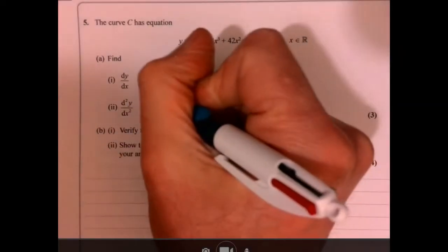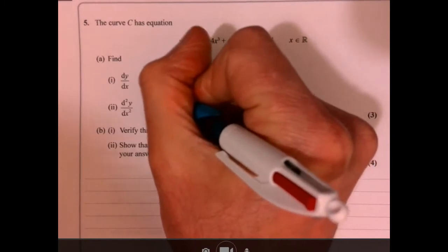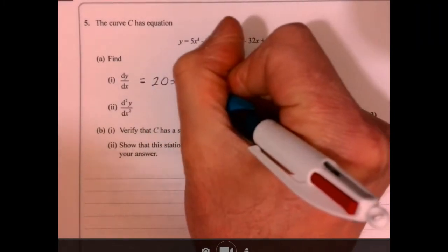Question 5. Well, we've got some nice easy marks to pick up here. Let's go and differentiate this first of all. It just tells me to do this. It's kind of guiding us through this question.